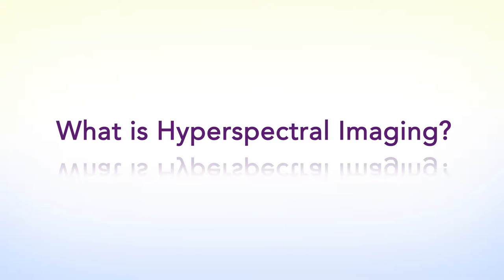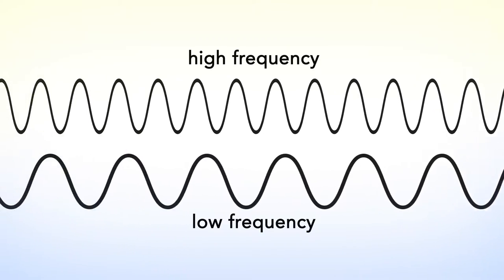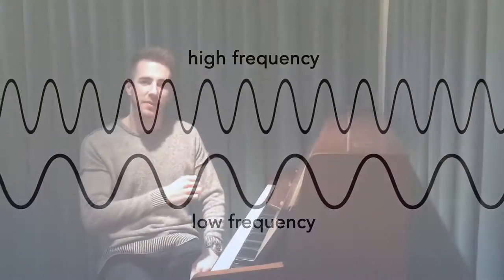What is hyperspectral imaging? We can begin to answer this by thinking about the similarities between light and sound. Light and sound are both waves, which means that they have a frequency at which they oscillate, and this frequency can tell us lots more information about the light or the sound. With sound, the frequency tells us the pitch that we're going to hear; with light, the frequency tells us the colour that we're going to see.